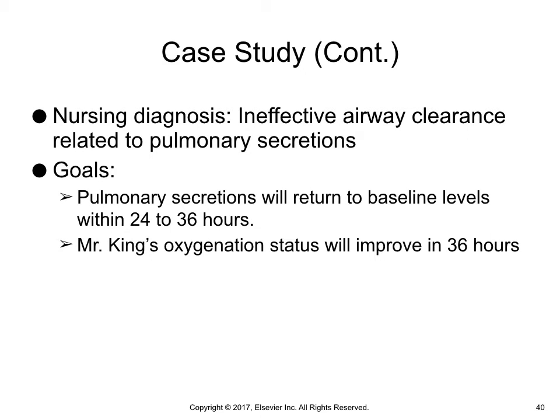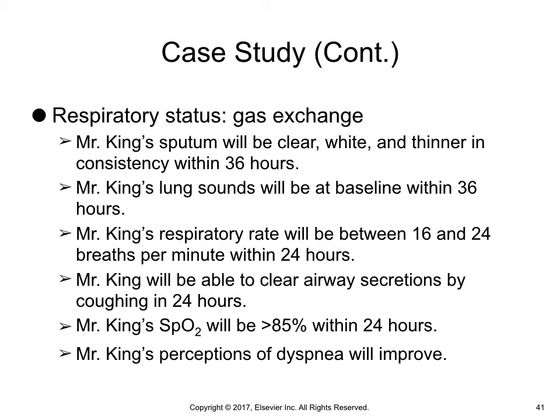Case study continued: an appropriate nursing diagnosis is ineffective airway clearance related to pulmonary secretions. Goals include: pulmonary secretions will return to baseline levels within 24 to 36 hours, and Mr. King's oxygenation status will improve in 36 hours. Expected outcomes include: Mr. King's sputum will be clear, white, and thinner in consistency within 36 hours; lung sounds will be at baseline within 36 hours; respiratory rate will be between 16 and 24 breaths per minute within 24 hours; he will be able to clear airway secretions by coughing in 24 hours; oxygen saturation will be greater than 85% within 24 hours; and perceptions of dyspnea will improve.